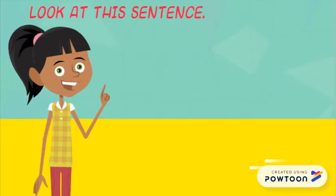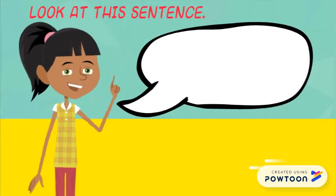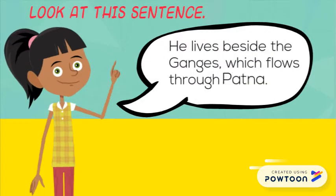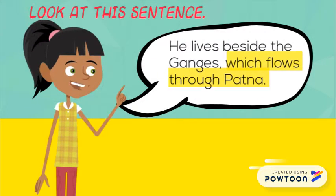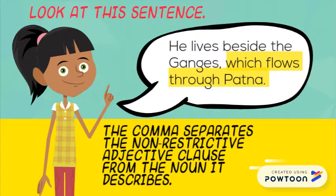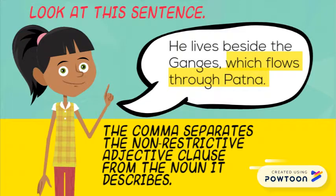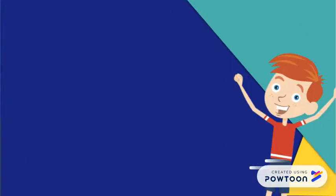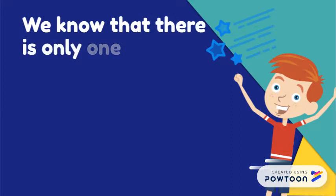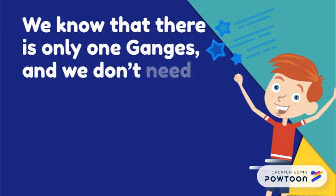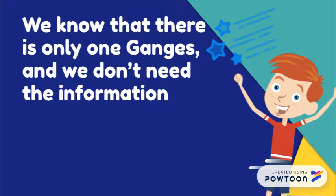Look at this sentence: He lives beside the Ganges, which flows through Patna. The comma separates the non-restrictive adjective clause from the noun it describes. We know that there is only one Ganges, and we don't need the information 'which flows through Patna.'